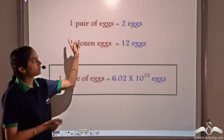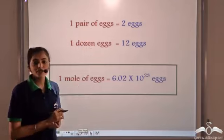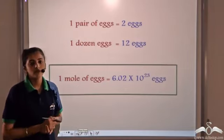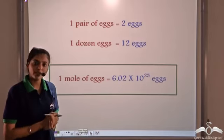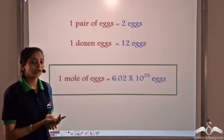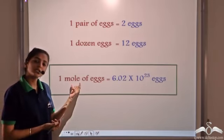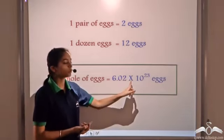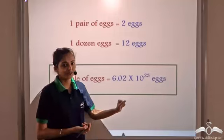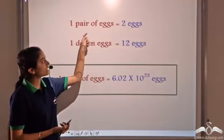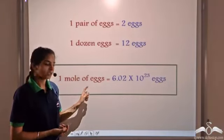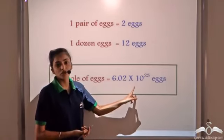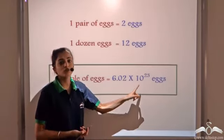When we say we have a pair of eggs, we know a pair is 2, so a pair of eggs means 2 eggs. A dozen of eggs means 12 eggs. Similarly, mole is just a number. A mole of eggs means there are 6.02 × 10²³ eggs. So mole, like the other units, is just a number. When we say 1 mole of eggs, that means there are 6.02 × 10²³ eggs.